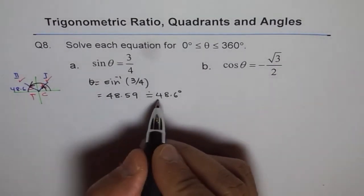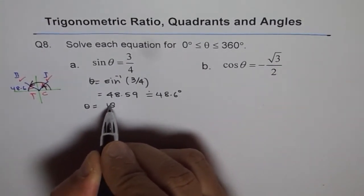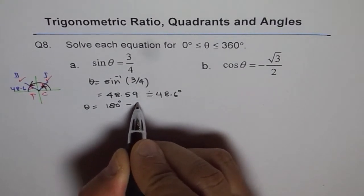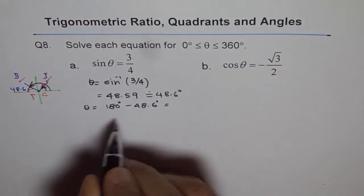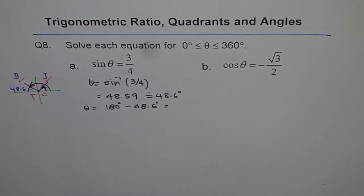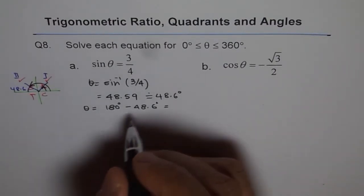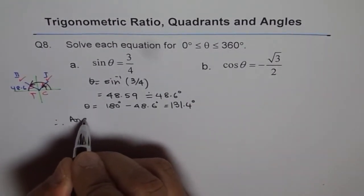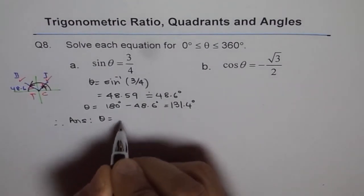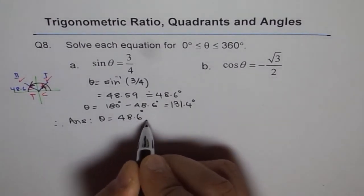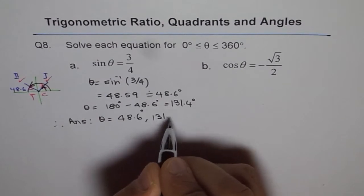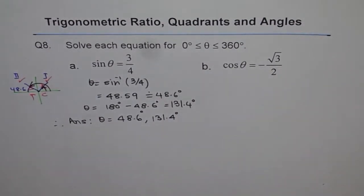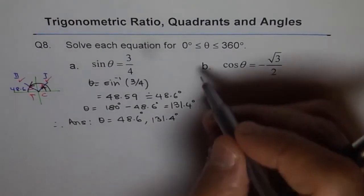So we have got θ as this and θ also as 180° - 48.6°. So these are the two solutions for the given problem. So we can do this and figure out it is 131.4. So the other one is 131.4 degrees. And therefore, our answer is that θ = 48.6° and 131.4°.